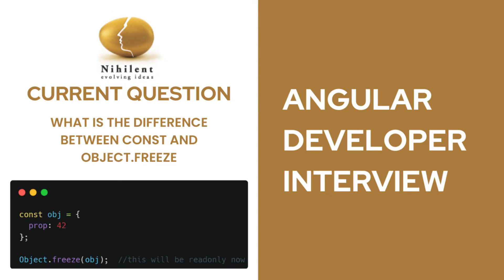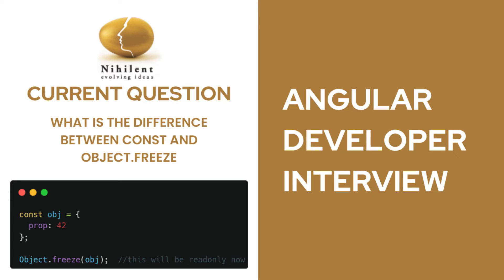What is the difference between Object.freeze and const? If we declare a const object, say const object = { a: 1 }, and then do object.a = 2, it will re-initialize the property — we're not redeclaring, just changing the value inside. The reference stays the same, only the value changes, so that is allowed. With Object.freeze, however, we cannot do that — the object becomes read-only.